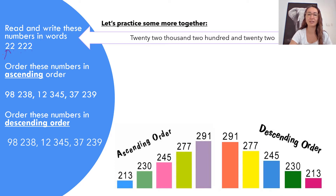When we put it together it reads like this: 22,000, 200. Now we don't just say 22 — we need to use our 'and': twenty-two thousand, two hundred and twenty-two.